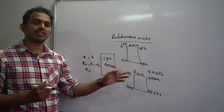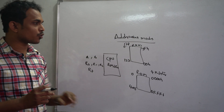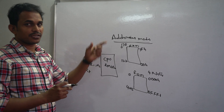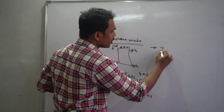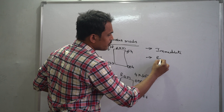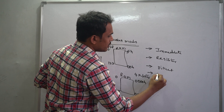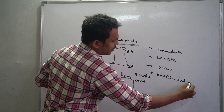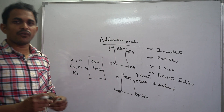Whenever you want to write programs using these registers and memories, you have to follow the addressing modes of assembly programming language. The 8051 supports five addressing modes: immediate addressing mode, register addressing mode, direct addressing mode, register indirect addressing mode, and indexed addressing mode.